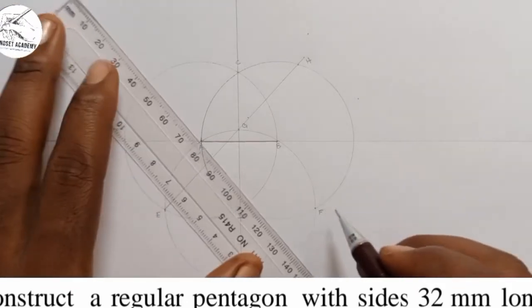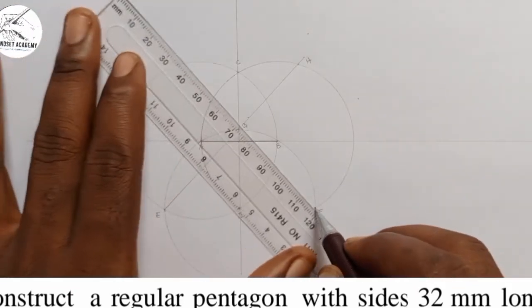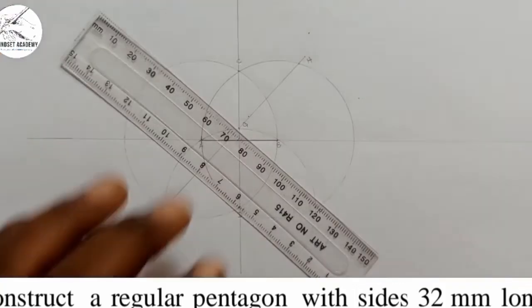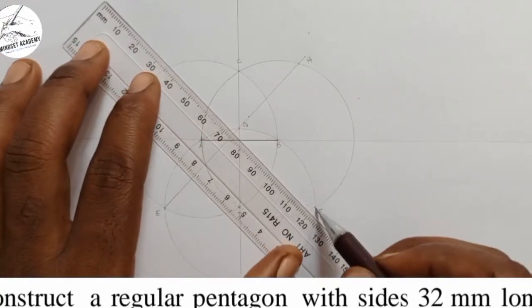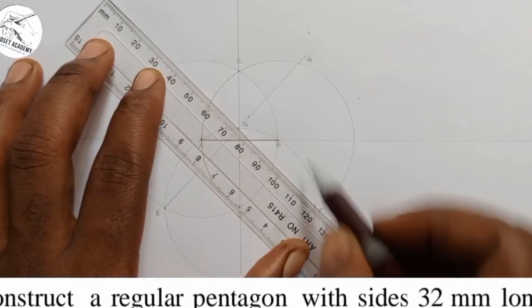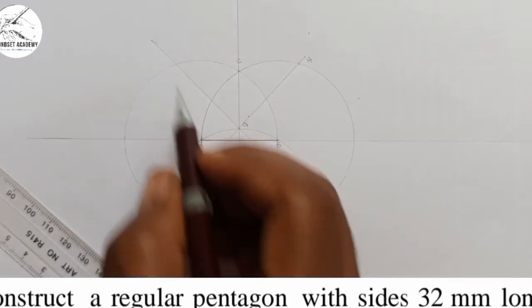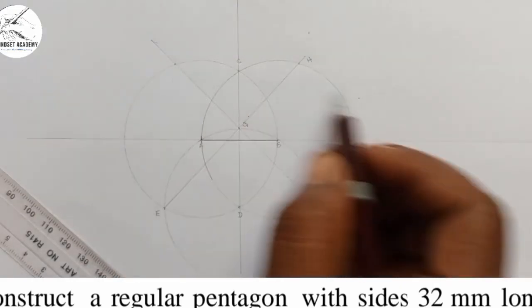I also draw a line that will pass through G from point F, passing through G from point F. And I will call that point where it intersects I.